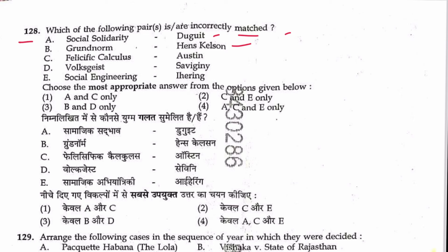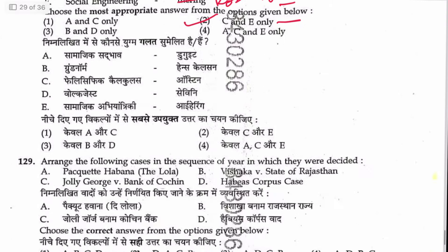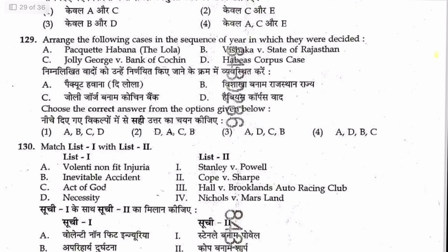Question 128: Match jurisprudential theories. One theory is that of Bentham, not Austin. Vojgist theory — social engineering by Roscoe Pound. Options C and E are correct. Answer is 2.